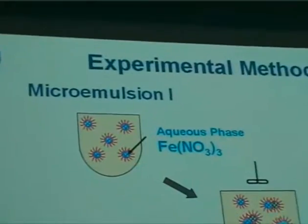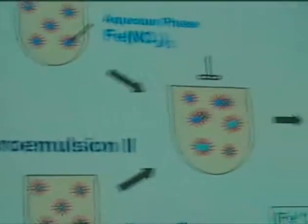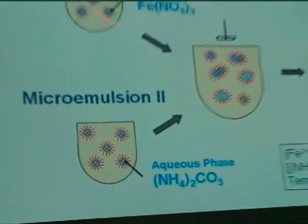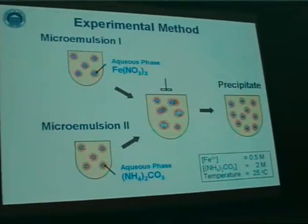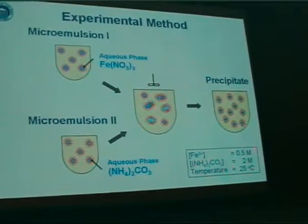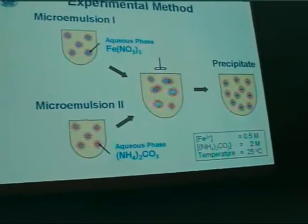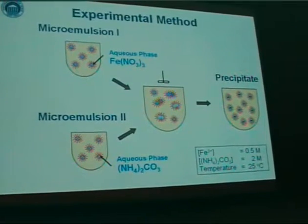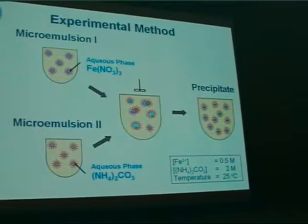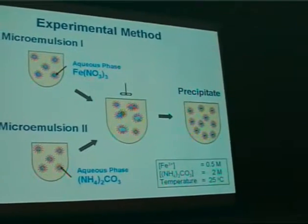We prepare a number of microemulsions with different compositions in duplicate: one contains iron nitrate in the aqueous solution, and the other contains a precipitant, namely ammonium carbonate, in the aqueous solution. Those are the concentrations of the salts we used. We then combine these two microemulsions and let them react — mass exchange takes place between the reverse micelles, and eventually precipitation happens in the confined space of these reverse micelles.